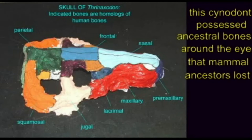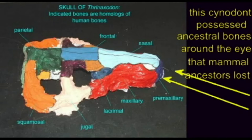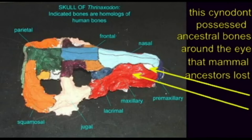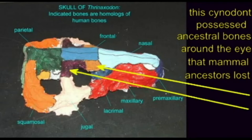The contact between the zygomatic bone and the frontal bone forms the post-orbital bar, which completely surrounds the lateral portion of the orbit with bone. This is one of the defining features of primates.